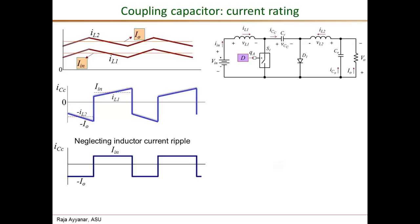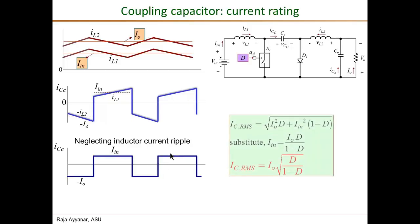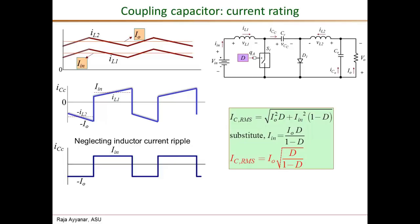The second requirement for the coupling capacitor is the RMS current rating. The RMS value of the coupling capacitor current comes out similarly to what we derived for a buck-boost, and equals Io times the square root of D over (1 minus D). This is obtained by plugging the waveform values into the definition of RMS current.